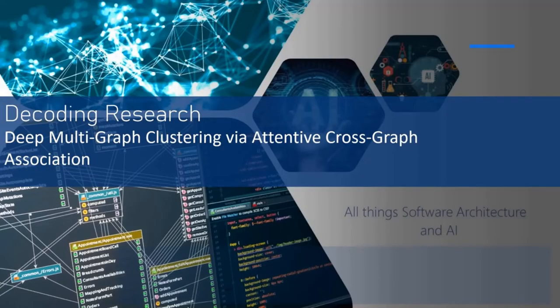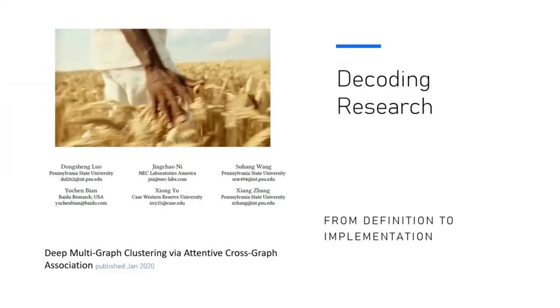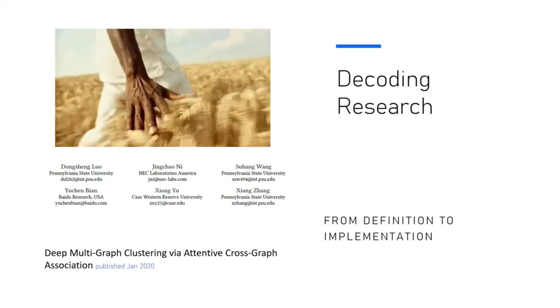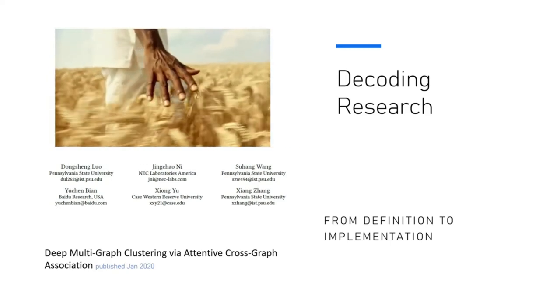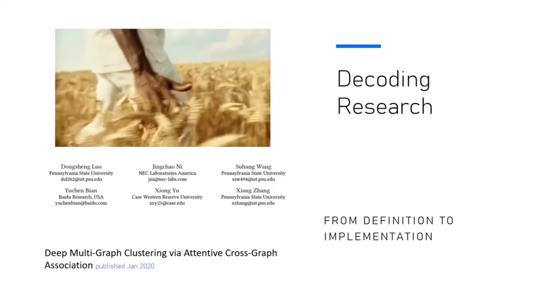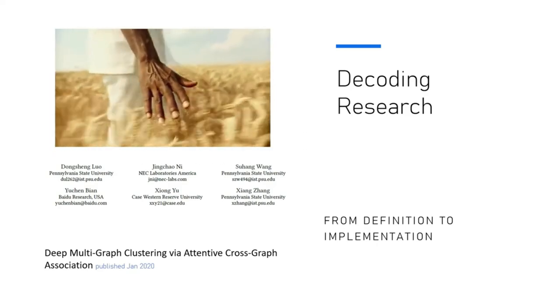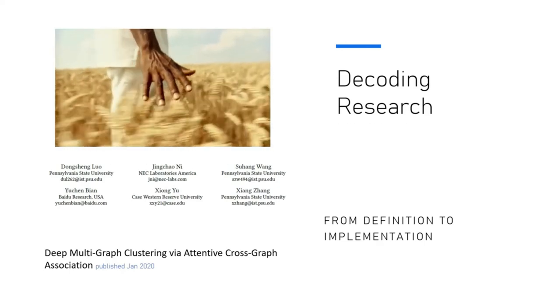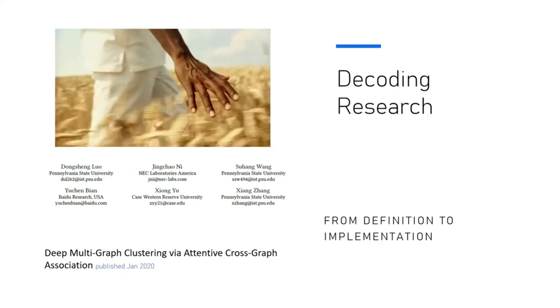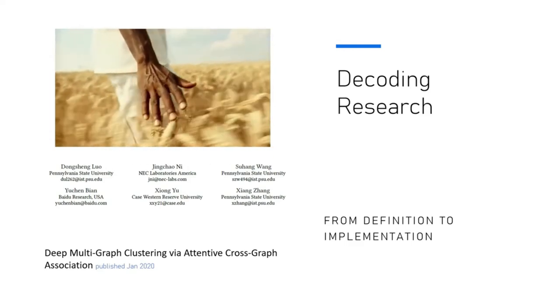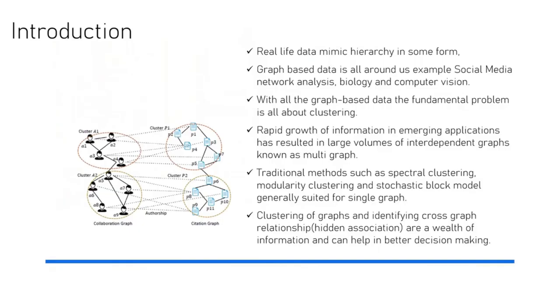Hey, thanks for attending another session by Decoding Research. Decoding Research is a set of videos which typically talks about papers, primarily research papers around AI and machine learning. In today's session, we're going to be talking about Deep Multigraph Clustering by Attentive Crossgraph Association. This is a research paper which came out in January of 2020. As the name suggests, it talks about multigraph clustering and is heavily indexed on attention-based mechanism and Cauchy distribution.